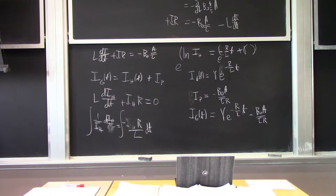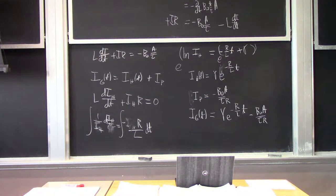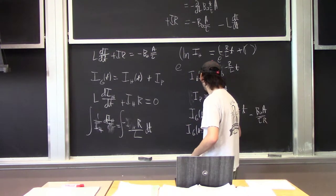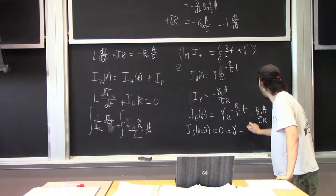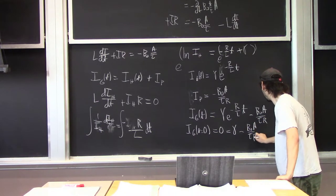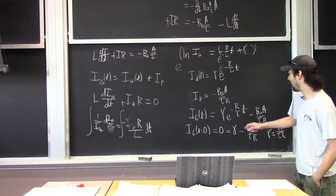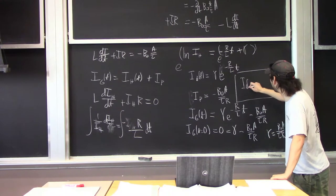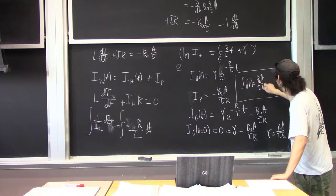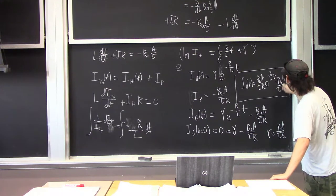We're not finished yet because we don't know what γ is. The initial condition is that at t = 0, the current is zero. Evaluating the general solution at t = 0: 0 = γ − B0 * A / (tau * R), so γ = B0 * A / (tau * R). Plugging that back in gives the final answer.